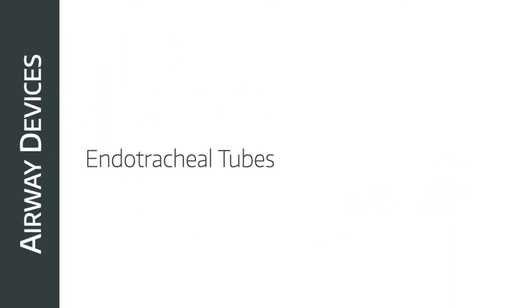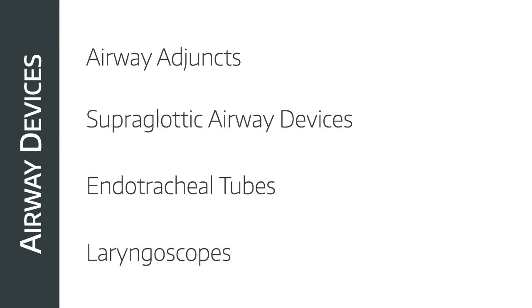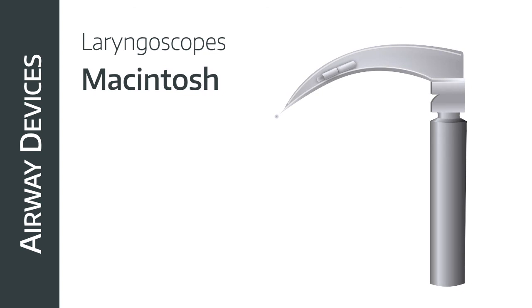Now on to laryngoscopes. We'll look at video laryngoscopy and fibreoptic intubation separately, but here are the three key types. First, the Macintosh — generally the preferred laryngoscope for adult patients. It's a curved blade with a tongue spatula to move the tongue to the left and improve your view, allowing direct vision of the larynx by passing the tip of the blade into the vallecula to lift the epiglottis. Batteries in the handle power the light source via a fibreoptic light path inside the blade. A stubby handle is available — shorter, helpful in obstetric patients where enlarged breasts make passing the scope into the mouth tricky. There are also video laryngoscopic equivalents of the Mac blade.